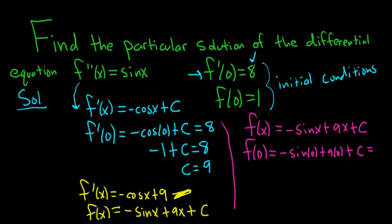And that's equal to 1. We're plugging in zeros for all the x's and setting it equal to 1, using our second initial condition. The sine of 0 is 0, and 9 times 0 is 0, so we just get C = 1.